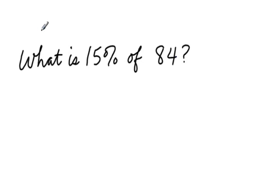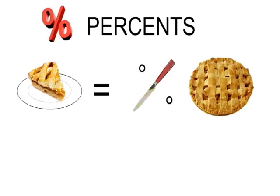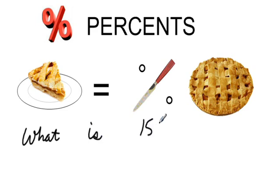Most of the time, we call this amount that we're trying to find the part of the whole. I have another illustration for that: the slice of pie equals the knife times the pie. What is 15%? That's the knife, and the pie is 84, the whole thing. So to find the slice — to find the part — we multiply the percent times 84.